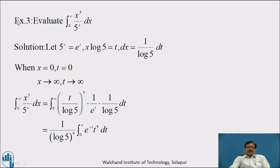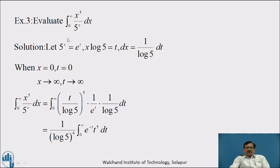Now we will see one more example of a different type. Evaluate integration from 0 to infinity of x raised to 5 divided by 5 raised to x dx. We have to convert this in terms of the Gamma Function. The suitable substitution is 5 raised to x equal to e raised to t. Taking logarithm on both sides, x log 5 equal to t, because log of e is 1. Therefore, dx equal to 1 by log 5 dt.